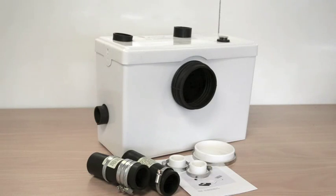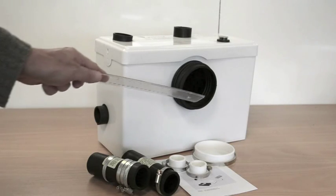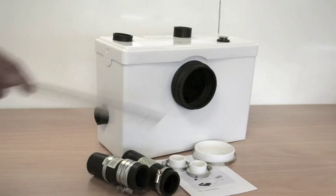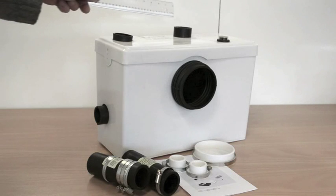The macerator pump has two 40 mm waste inlets and one 100 mm toilet waste inlet. There is a 40 mm waste outlet for connection to the sewer line.